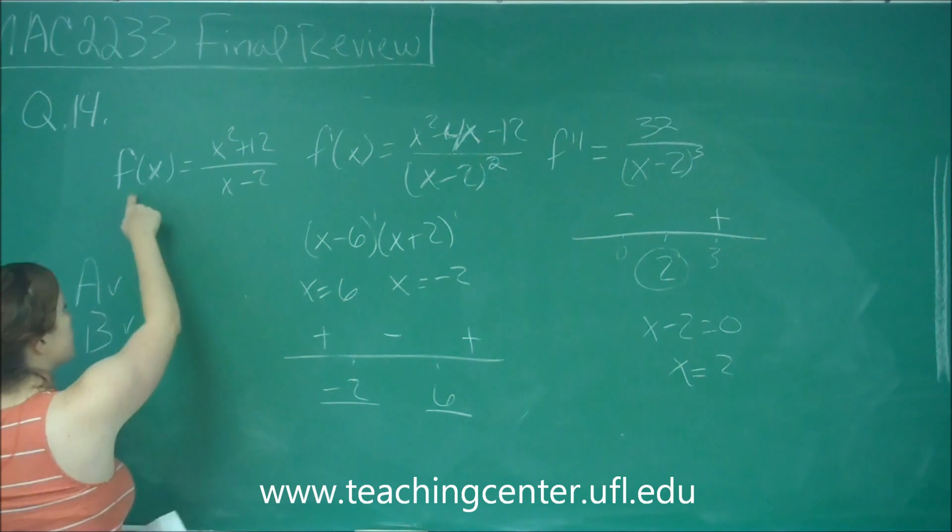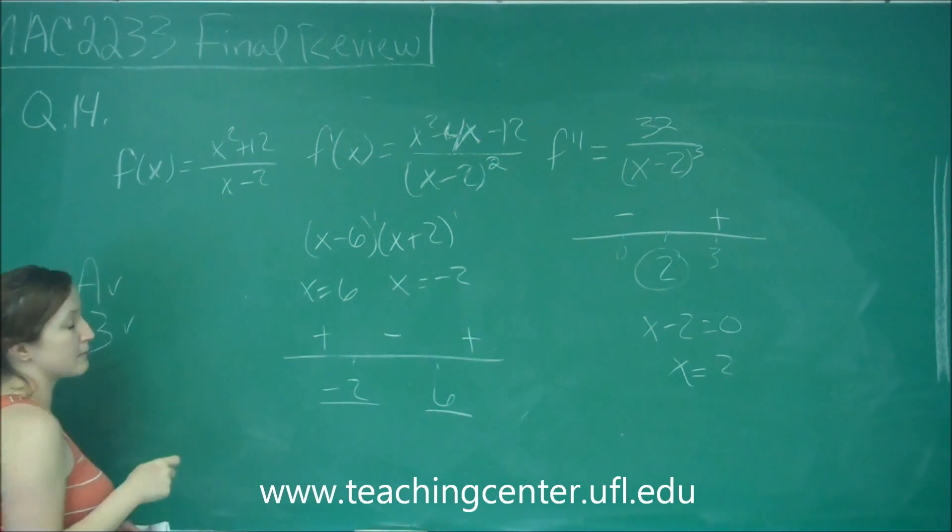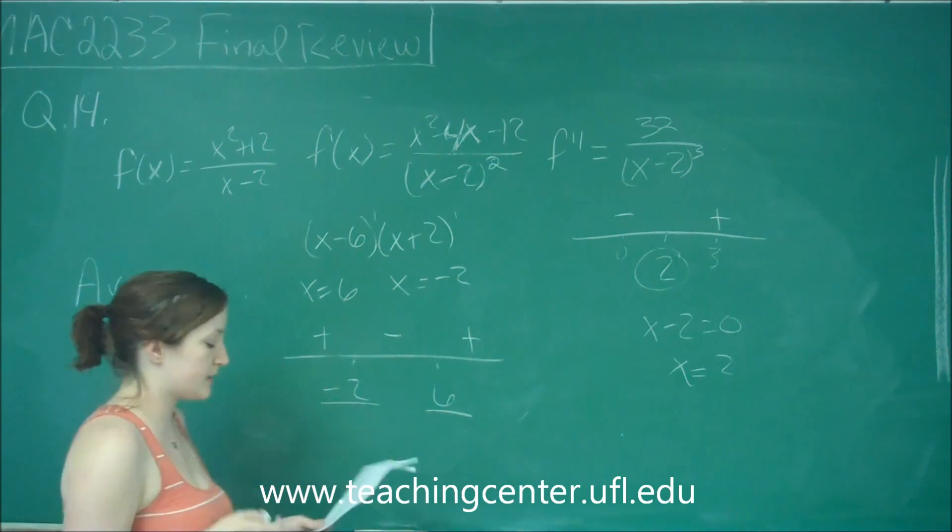If we look back at our first function, we have x minus 2 as our denominator here, which means we've got a vertical asymptote at x equals 2. Therefore, we can't have an inflection point there, so it is not C.